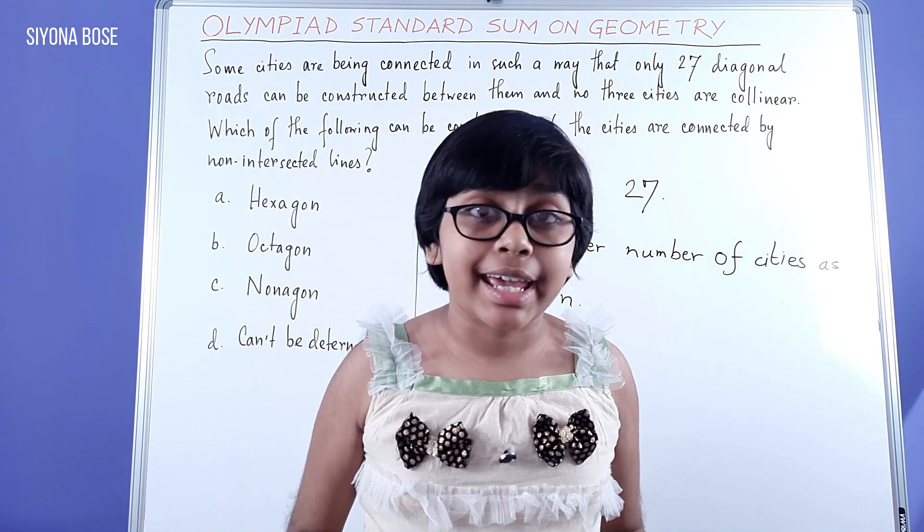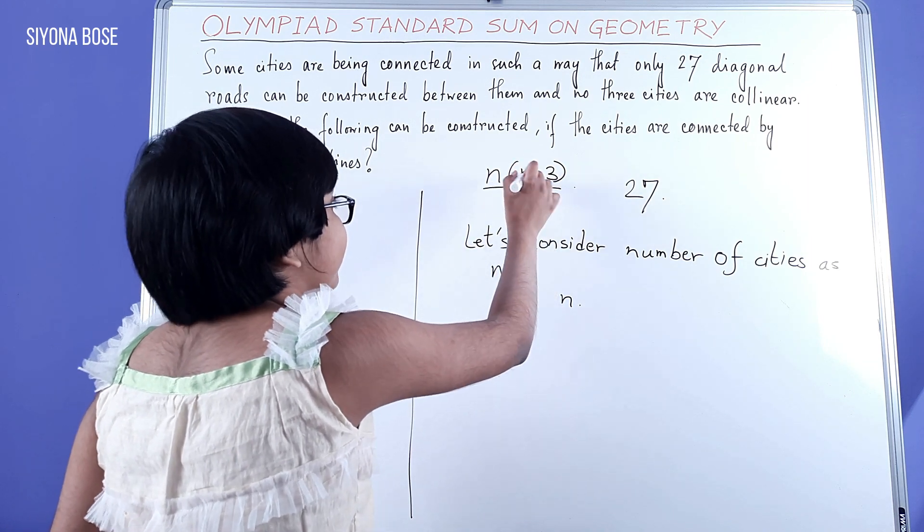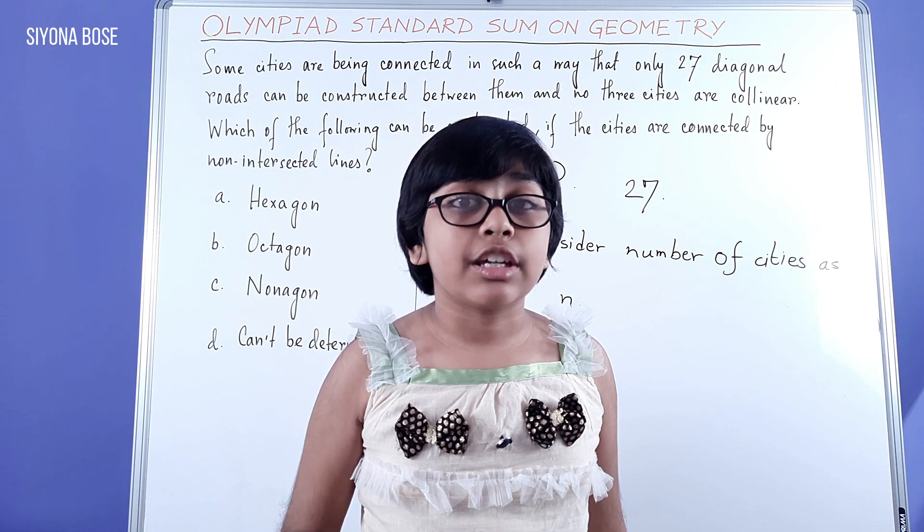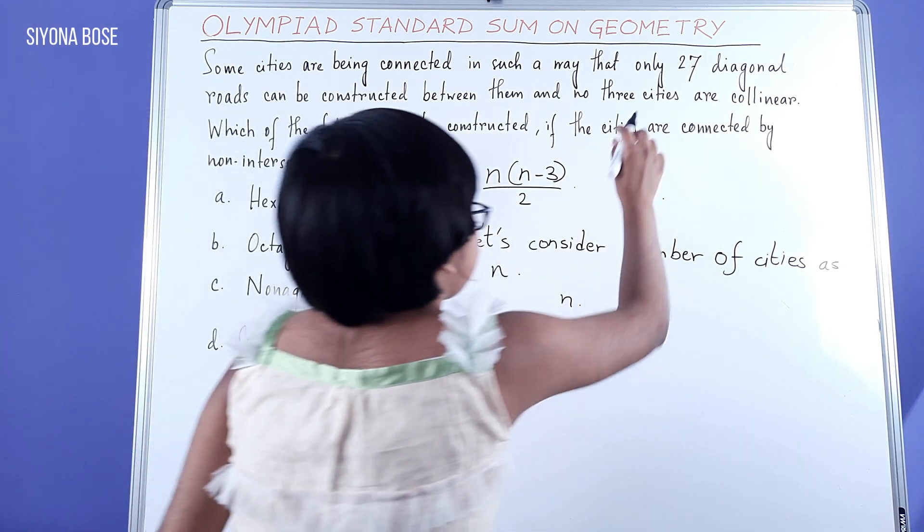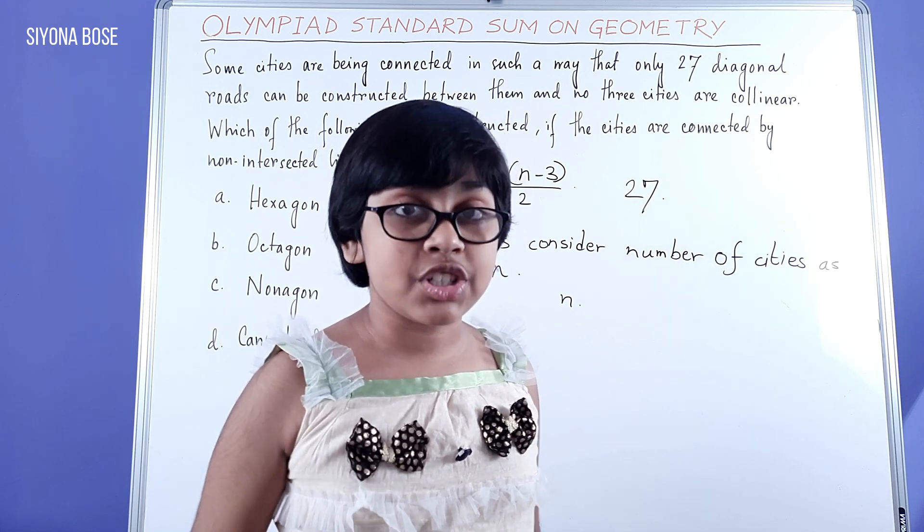So now that we have understood everything and we have considered this n, this formula is valid. Where n is the number of sides in the polygon, now we can make an equation using this formula and the information about 27 diagonal roads that can be constructed.